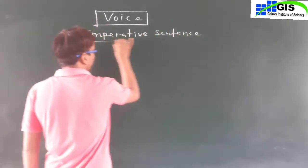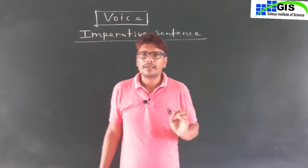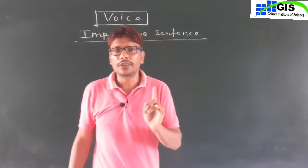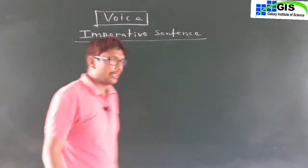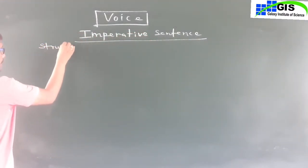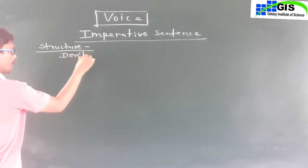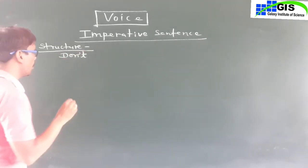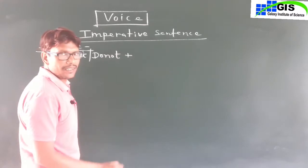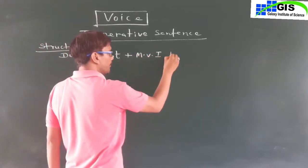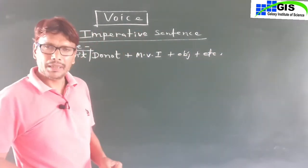Today we take imperative sentences in voice. In an affirmative imperative sentence, you will get the first form of the main verb, then the object, then etc. But today we take negative sentences. The structure of a negative imperative sentence in active voice is: 'Don't / Do not + first form of the main verb + object + etc.'